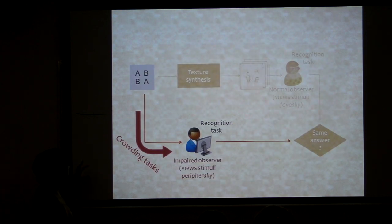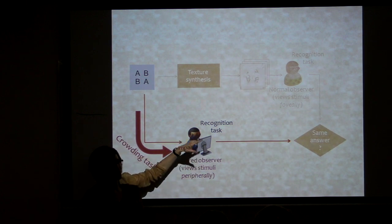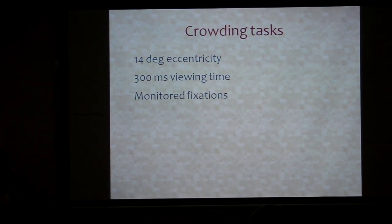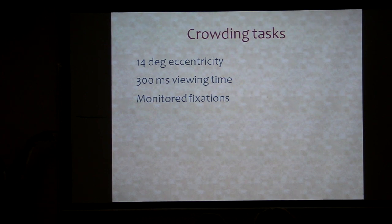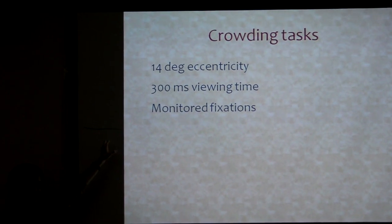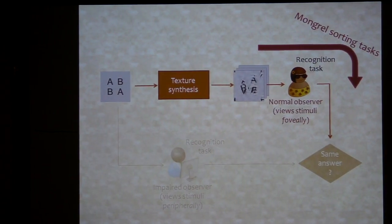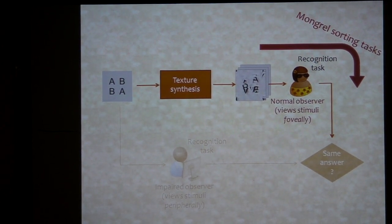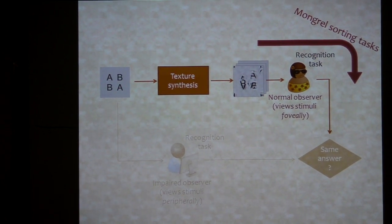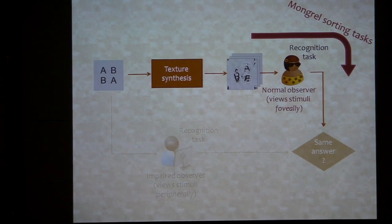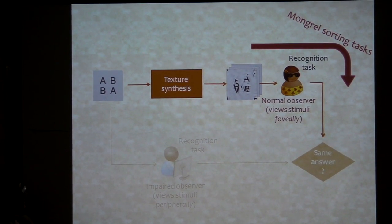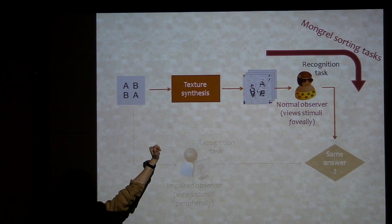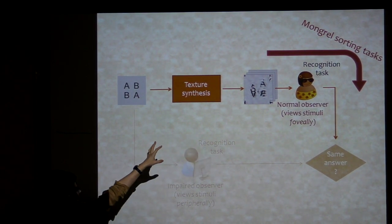The full picture looks like this: you have one set of observers doing the crowding tasks, looking at things in the periphery and being asked which of the four targets is present — in this case at 14 degrees eccentricity for 300 milliseconds, with fixations monitored. The second half: you take the same images, do texture synthesis to get mongrels, and an observer just looks at those stimuli foveally for as long as they want, sorting them into four piles according to which category they think they came from. We let them look for as long as they want because they're being almost our ideal observer — we want to know what performance is possible with the summary statistics.